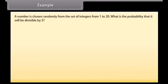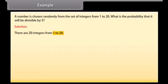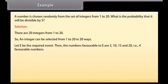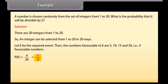Example: A number is chosen randomly from the set of integers from 1 to 20. What is the probability that it will be divisible by 5? Solution: There are 20 integers from 1 to 20, so an integer can be selected in 20 ways. Let E be the required event. The numbers favourable to E are 5, 10, 15, and 20 — that is, 4 favourable numbers. P(E) = 4/20 = 1/5.